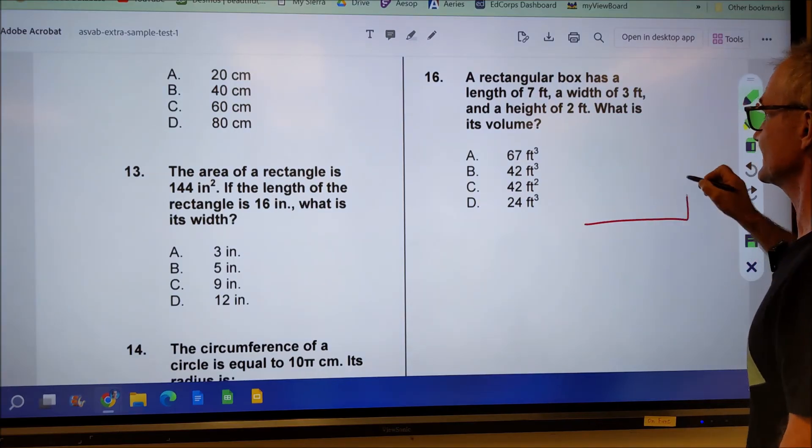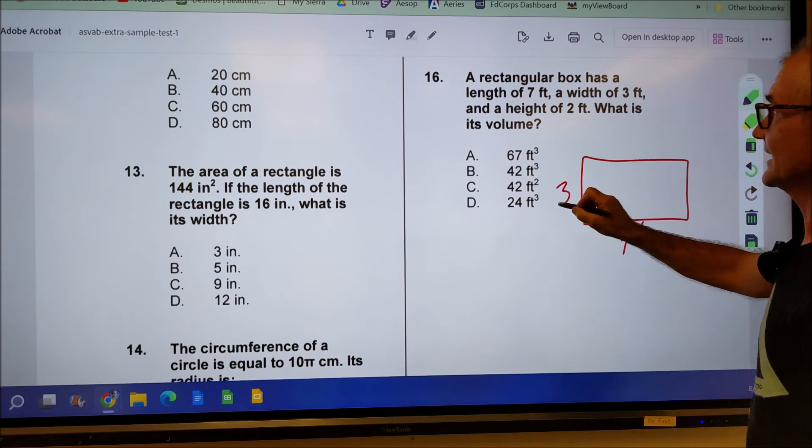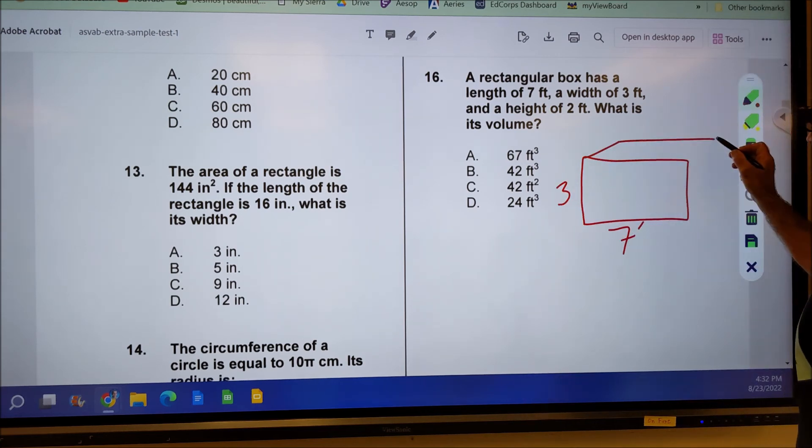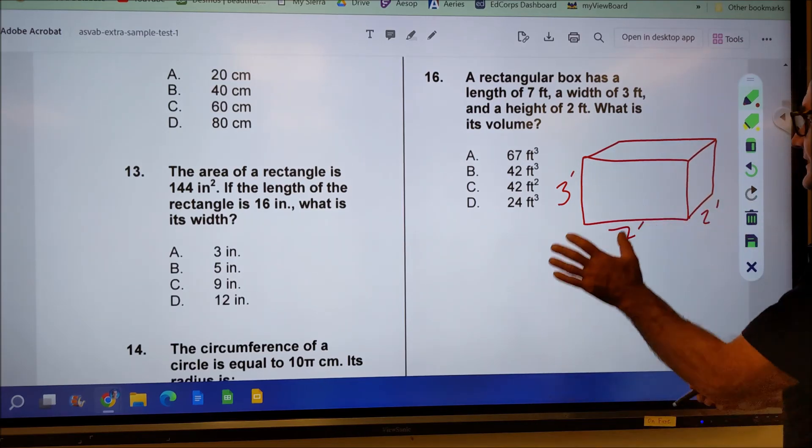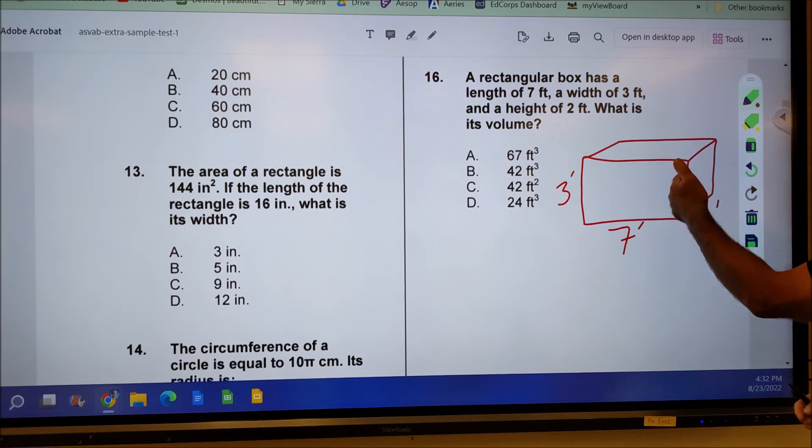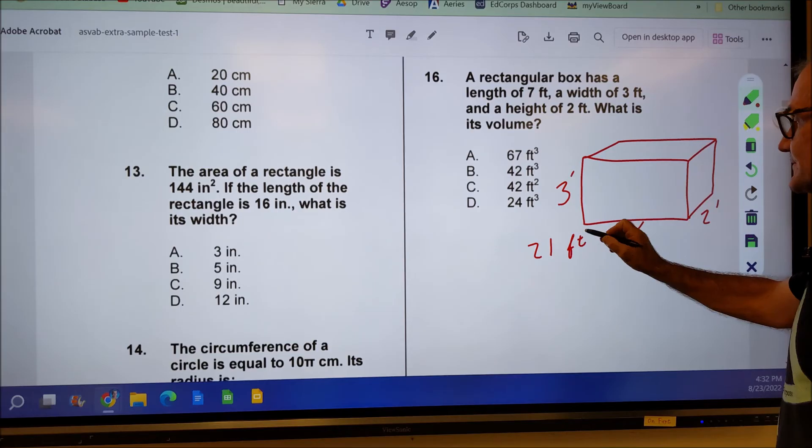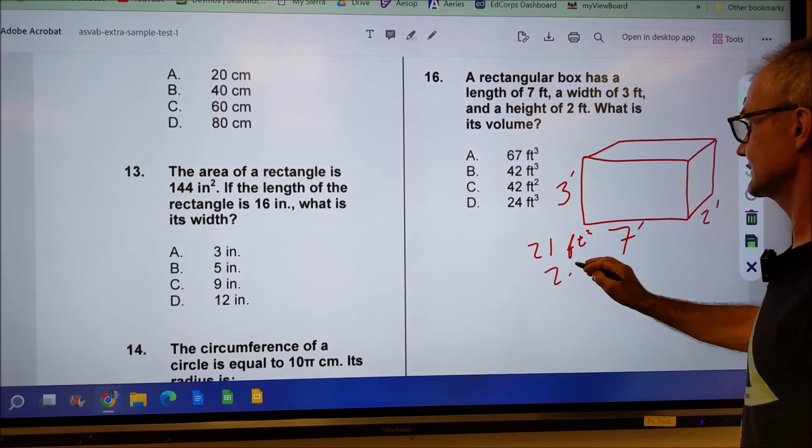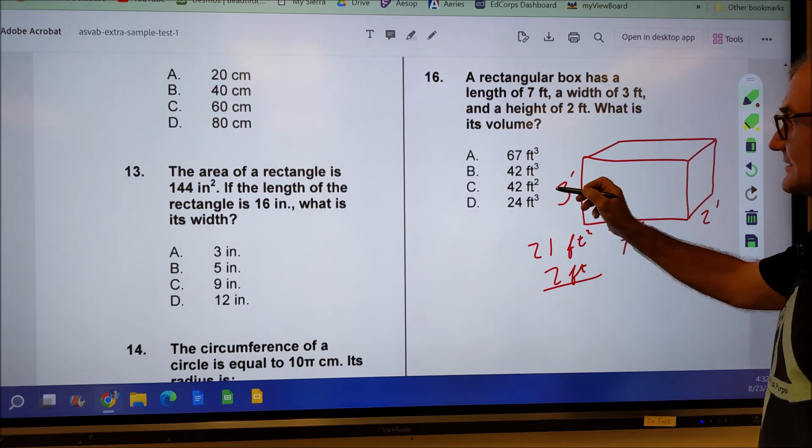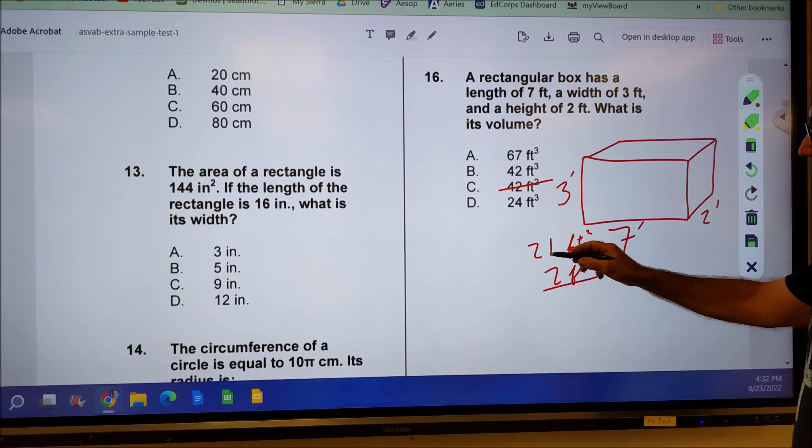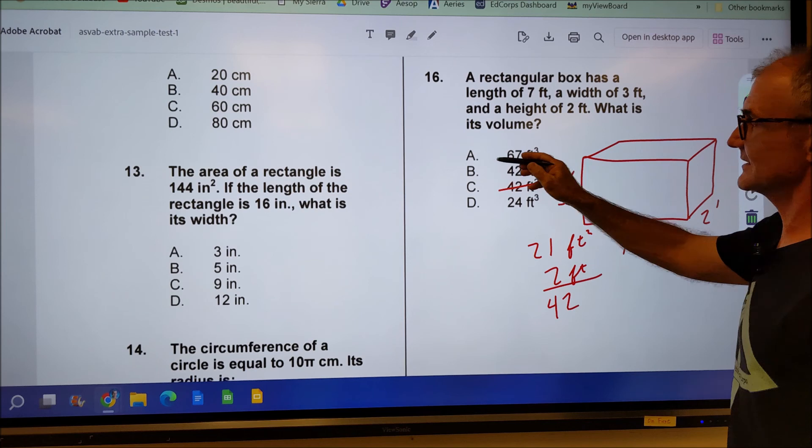Rectangular box has a length of seven feet and a width of three feet. So this is feet, one tick mark, and a height of two feet. So like a depth going back is two feet deep. What is the volume? Well, it's going to be the area of the base times the depth. Seven times three is 21. Feet times feet is square feet times the depth of two feet. So now I have feet times feet times feet or cubic feet. So I could know this one's wrong right there because that's square feet. And then I have 21 times two, 42 cubic feet. There's my answer right there.